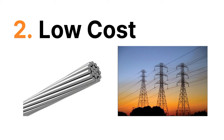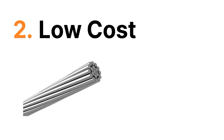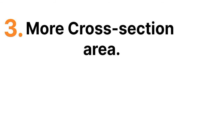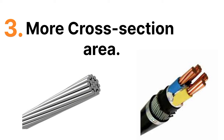The third reason is that aluminium has a larger cross-sectional area than copper. Because aluminium has more cross-sectional area than copper, that's why we use aluminium as a transmission line conductor.